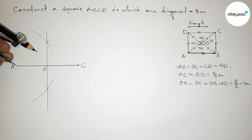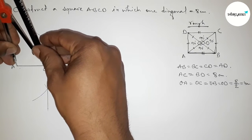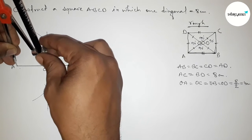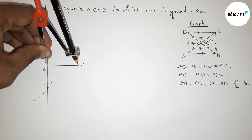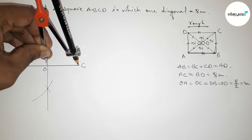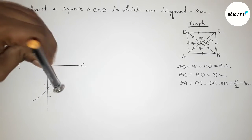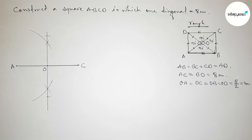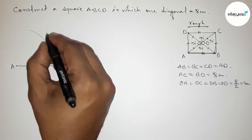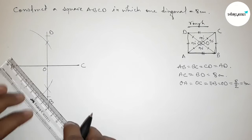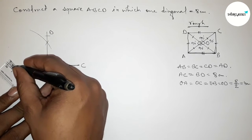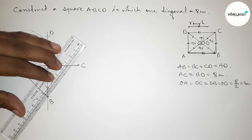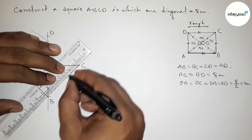Now checking this — OA equals OC. Taking the length OA and checking: this is perfectly equal with OC. Now cut here and cut here. Taking here point B and here point D.